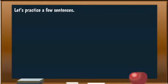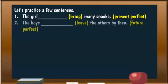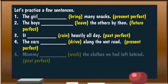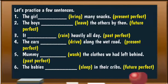Now let's go straight into our practice. We're going to work with a few sentences — six sentences. In brackets we have the tense that is to be formed: our present perfect, future perfect, and past perfect. And in brackets we also have our verbs that we're going to form the past participle to be used with those tenses, formed from the verb 'to have.'